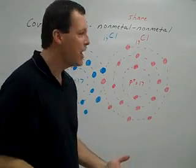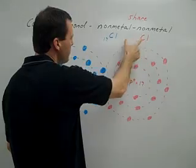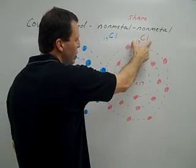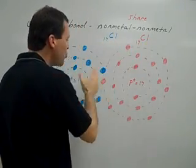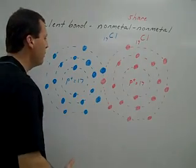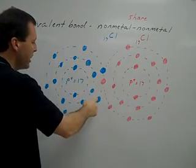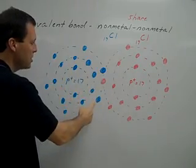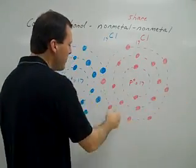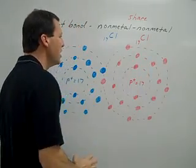Now for this example, I'm going to use two chlorine atoms. Here's my one chlorine atom, here's my other chlorine atom. And I've drawn both chlorine atoms on the board. You can see that each chlorine atom, this one here, has seven valence electrons. They're blue in this case. And this chlorine atom has seven valence electrons, and they're red in this case.